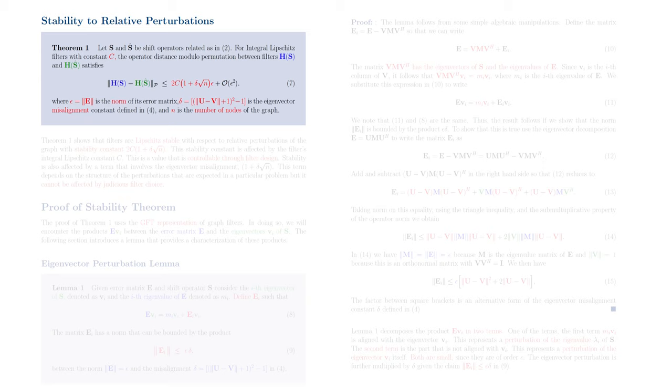These filters are made up of the same coefficients H-k instantiated on these two different shift operators, S and S-hat. If the filters are integral Lipschitz with constant C, the operator distance modulo permutation between the two filters is bounded by 2 times the Lipschitz constant of the filter C times 1 plus delta square root of n times epsilon,